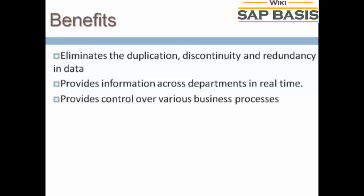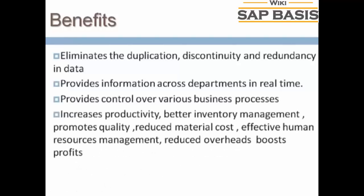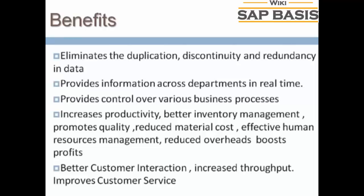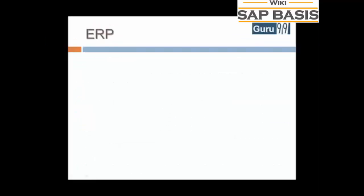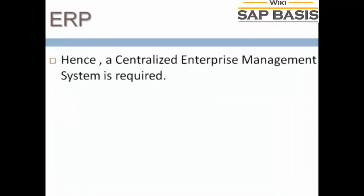It provides control over various business processes. It increases productivity, provides better inventory management, promotes quality, reduces material cost, allows for effective human resources management, and reduces overhead while boosting profits. It provides better customer interaction, increased throughput, and improved customer service. Hence, a centralized enterprise management system is required.